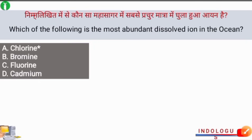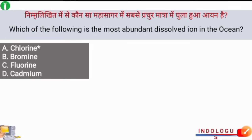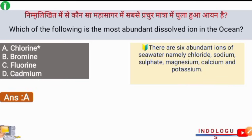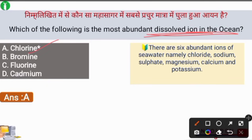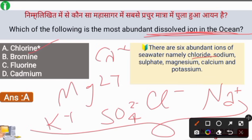Next question: Which is the most abundant dissolved ion in the ocean? The right answer is option A, that is Chlorine. Chlorine (Cl-) is considered the most abundant dissolved ion in the ocean. There are six abundant ions of seawater: Chloride (Cl-), Sodium (Na+), Sulphate (SO4 2-), Magnesium (Mg2+), Calcium (Ca2+), and Potassium (K+).